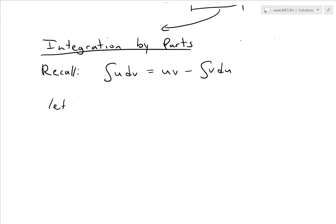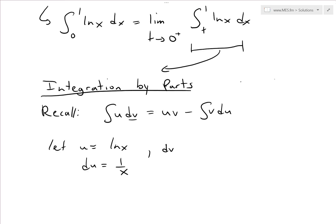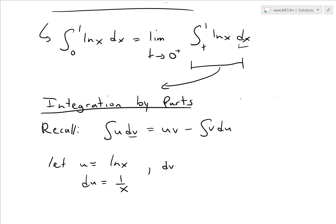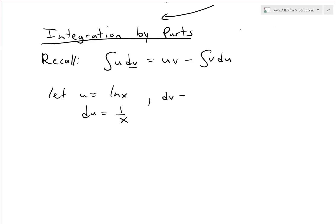For integration by parts, we pick u to simplify upon differentiation. So we let u equal ln(x), meaning du equals 1/x. Then our dv is just dx, and integrating gives v equals x.